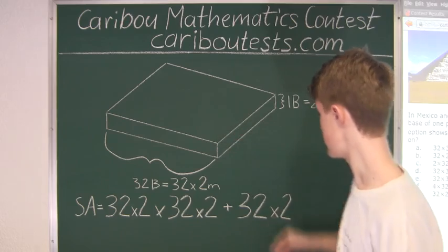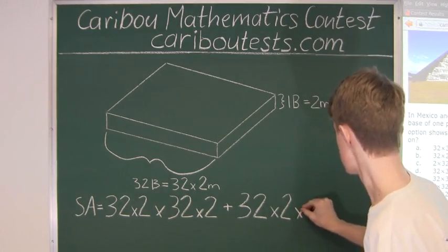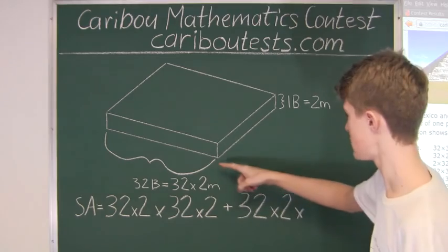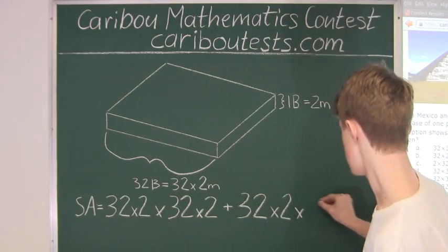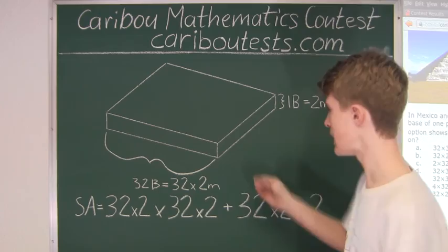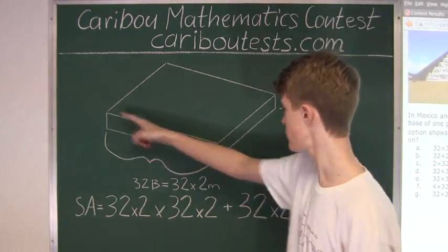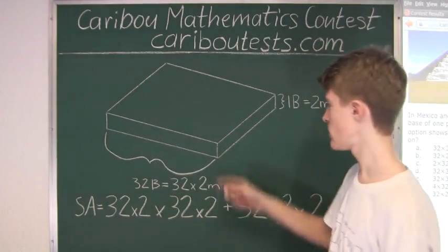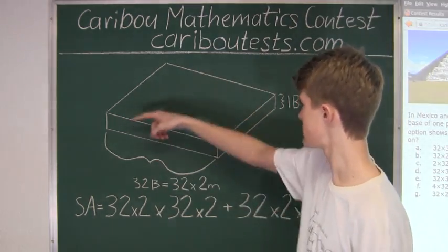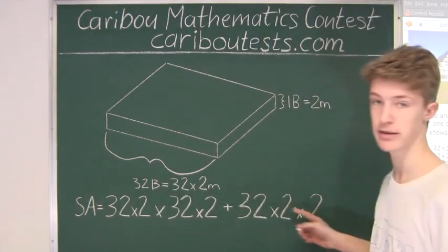That layer is one block which we know is 2 meters. So therefore we know that height is 2 meters. So then we have this 32 times 2 times 2. And now we know that 32 times 2 times 2 is a surface area of one side and since we have 4 sides of the same surface area we just multiply this by 4.